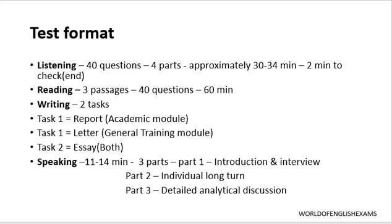The test is divided into four parts: listening, reading, writing, and speaking. There are two modules depending on the reason the test is taken. If a student wants to study in a native English-speaking country and belongs to a non-native English-speaking country, the appropriate module is the academic module. If the purpose is to migrate, settle, and work in a foreign country where English is the primary language, then you go for the general training module. It varies from one person to another depending on their requirement.